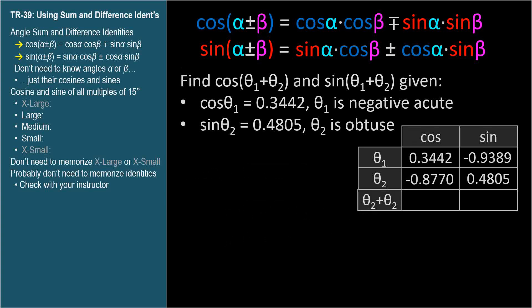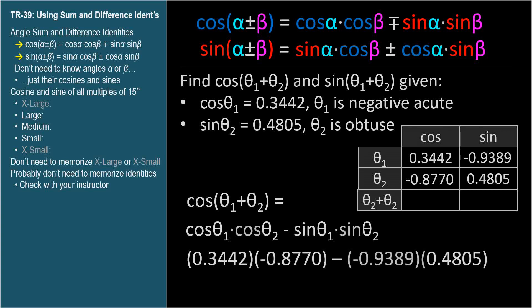So now, using the cosine identity, cosine(θ₁ + θ₂) equals cosθ₁·cosθ₂ - sinθ₁·sinθ₂. Substituting our known numbers, we get 0.1493, which is cosine(θ₁ + θ₂).